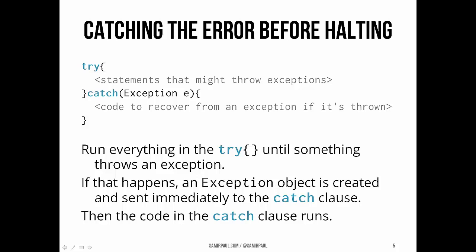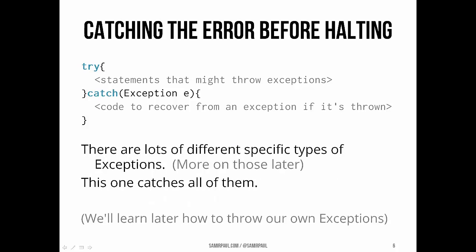There are two parts to a try-catch statement: a try and a catch. In the try, we have the statements that might throw exceptions. In the catch, we specify what we're trying to catch and what to do if we catch an exception. The basic idea is we run everything in the try clause until one of them throws an exception. If that happens, we create an exception object that gets sent immediately to the catch clause, and the code inside the catch clause runs. On the other hand, if we run through all the code in the try without any exceptions, we skip the catch clause entirely. There are many different kinds of specific exceptions, but using 'Exception e' in the catch clause catches all of them. We'll go into more detail about specific exceptions later.